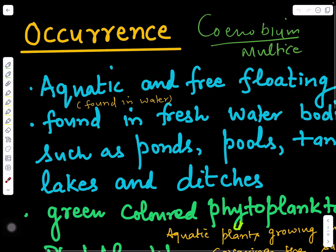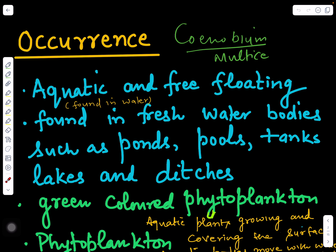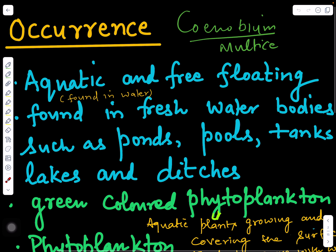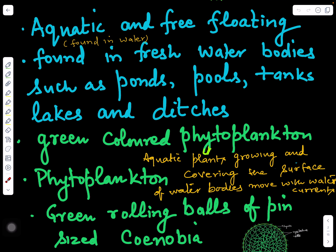Now if we see its occurrence — where it is found — Volvox is found in water; it is aquatic in nature and is found free-floating in freshwater bodies like ponds, pools, tanks, lakes, and ditches. It is a green-colored phytoplankton. Phytoplankton are plants which float on the surface of water and move along with water currents, forming a green scum-like structure.